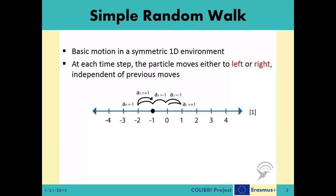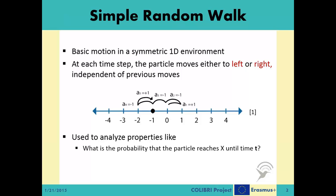This model can be used in many different fields like ecology, economics, physics, chemistry, and more. It is generally used to analyze several properties of the motion and find answers to specific questions, such as what is the probability that the particle reaches point x until time t, or what is the first passage time distribution to point x, depending on the system parameters.